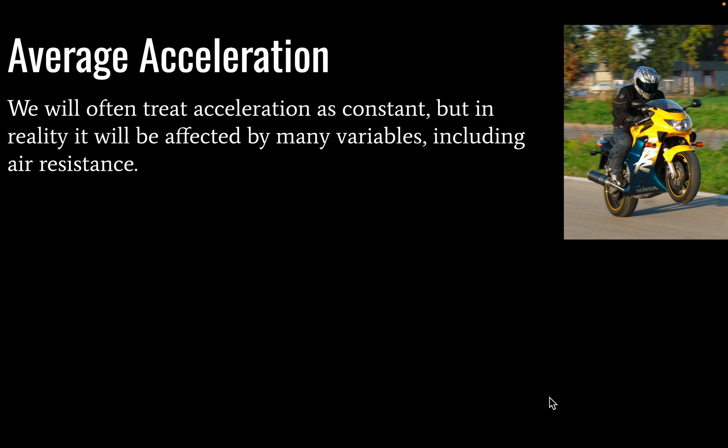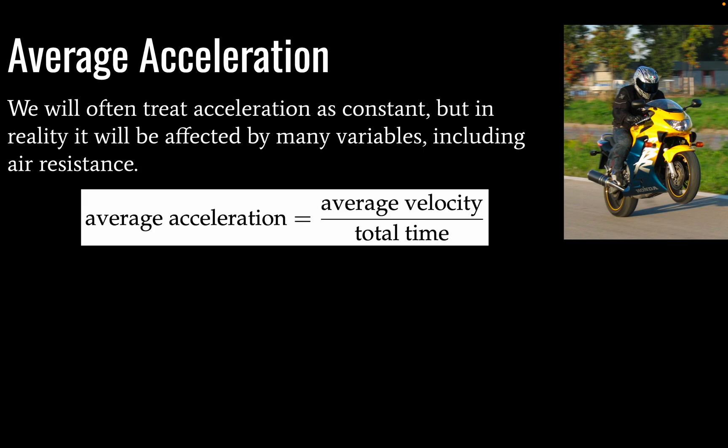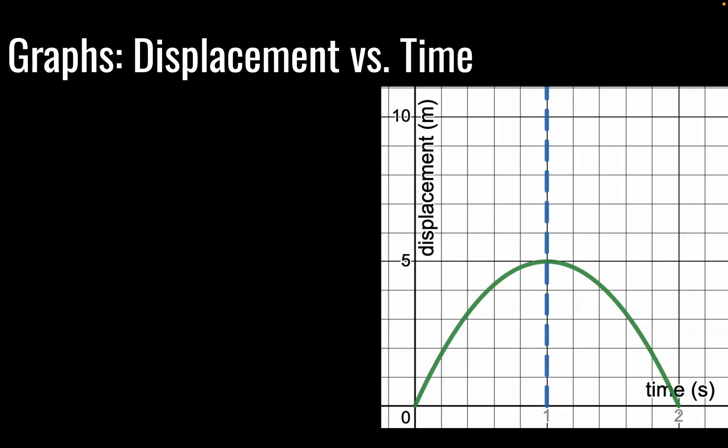Okay, so average acceleration. Usually we'll talk about acceleration as a constant in IB physics, but in reality, we're usually simplifying our model because real acceleration is going to be more complicated. So, in any case, average acceleration will be equal to average velocity divided by total time. And there you go.